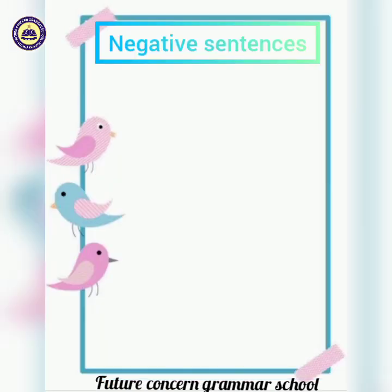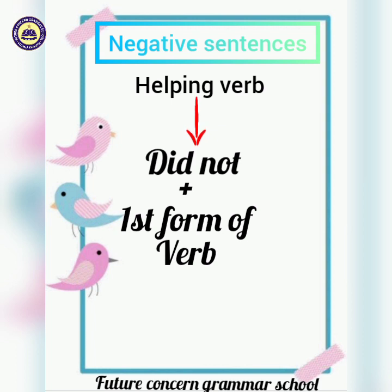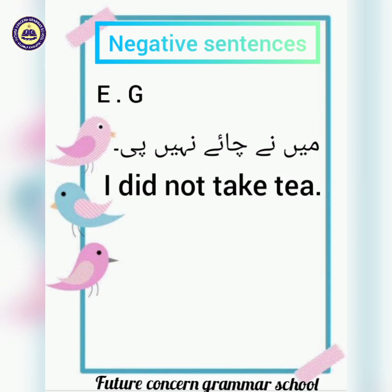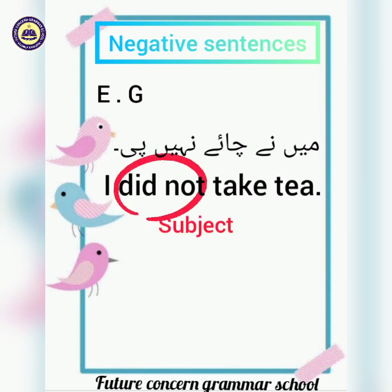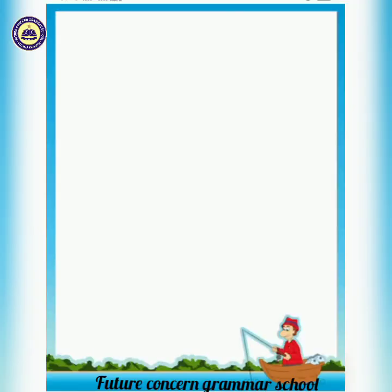Moving on to negative sentences — as the name suggests, negative means 'nahi' (not). In past indefinite negative sentences, 'did not' is used with the first form of the verb. For example, 'Main ne chai nahi pi' — 'I did not take tea.' Here 'I' is the subject, 'did not' is the helping verb indicating negation, 'take' is the first form of the verb, and 'tea' is the object.